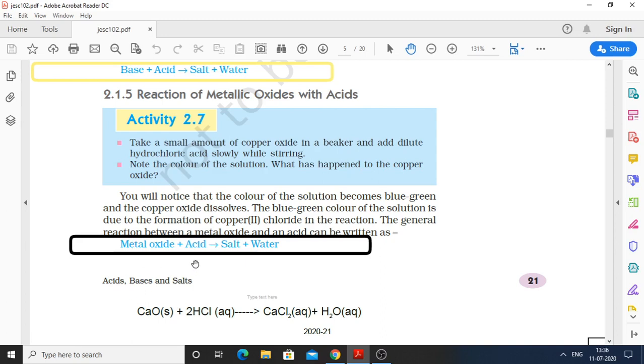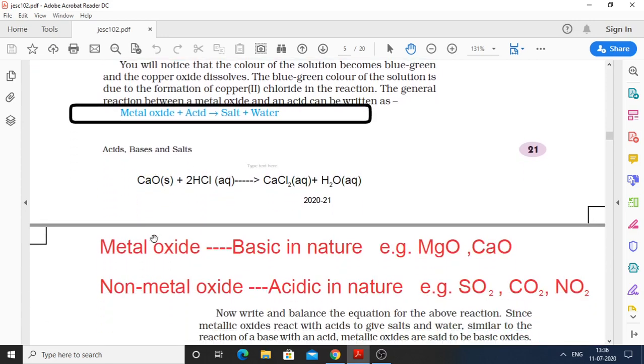Metal oxide is classified as basic in nature. Metal oxides are basic. Non-metal oxides are acidic. We need to remember that metal oxide will be basic and non-metal oxide will be acidic. What are metal oxide examples? Metal oxide is made by metal and oxygen - magnesium oxide, calcium oxide. What is non-metal oxide? Sulfur, carbon, nitrogen with oxygen - sulfur dioxide, carbon dioxide, nitrogen dioxide. These are non-metallic oxides and these oxides are acidic.